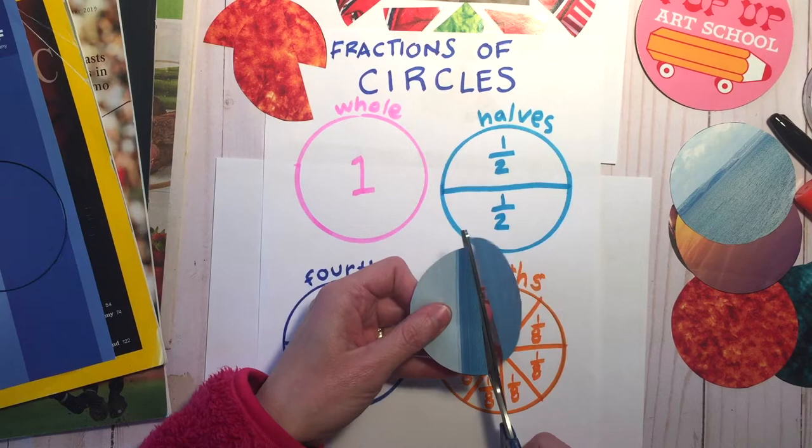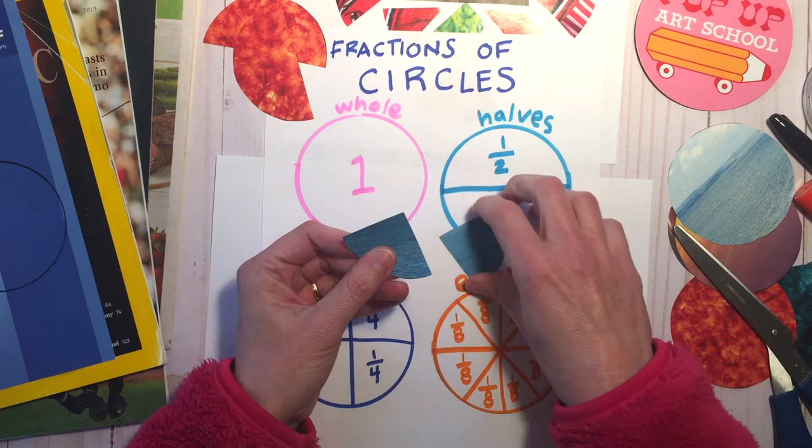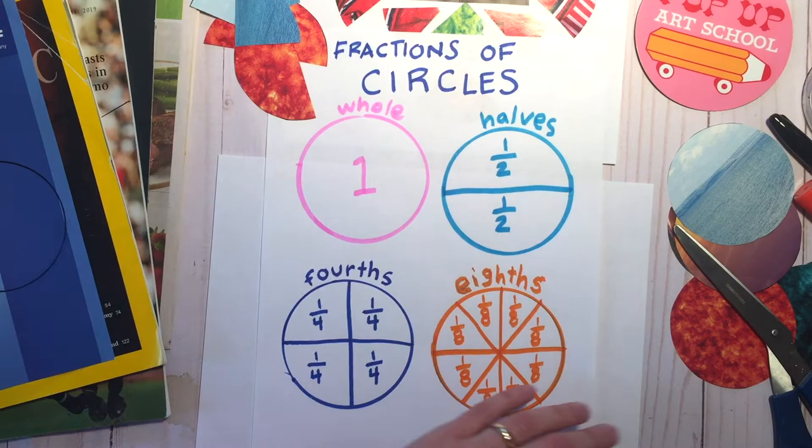Next I'm going to do fourths. Cut in half, place them on top of each other, line them up and then cut in half again. Put those to the side.